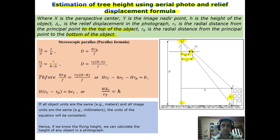From the principle of similar triangles, we can say rb upon d is equal to f upon H, where H is the flying height. So rb upon d equals f upon H, and rearranging the terms, d equals H·rb upon f.